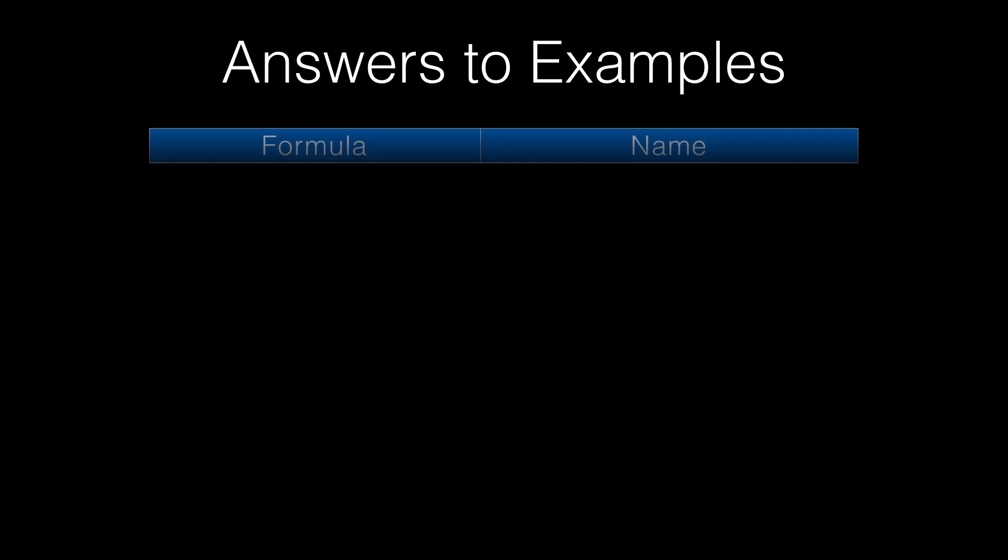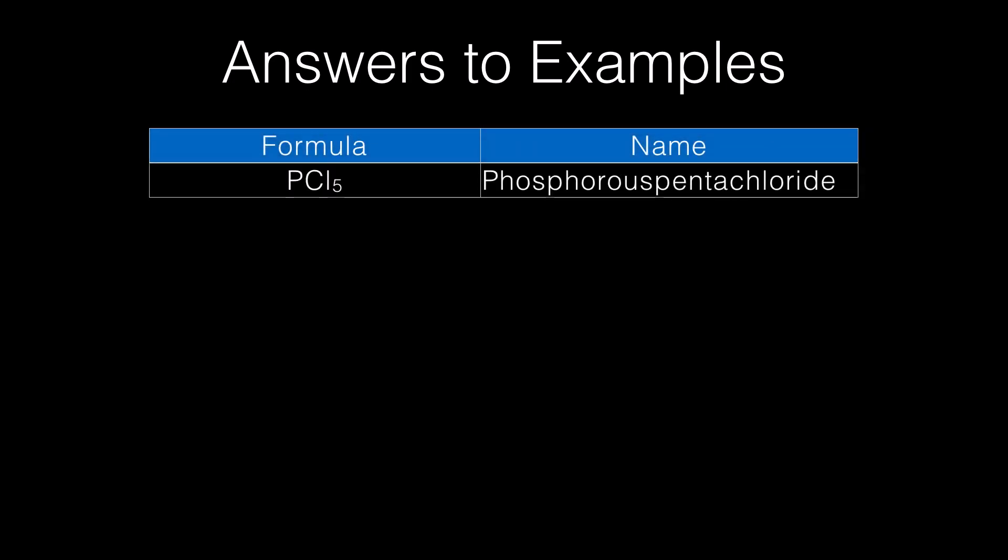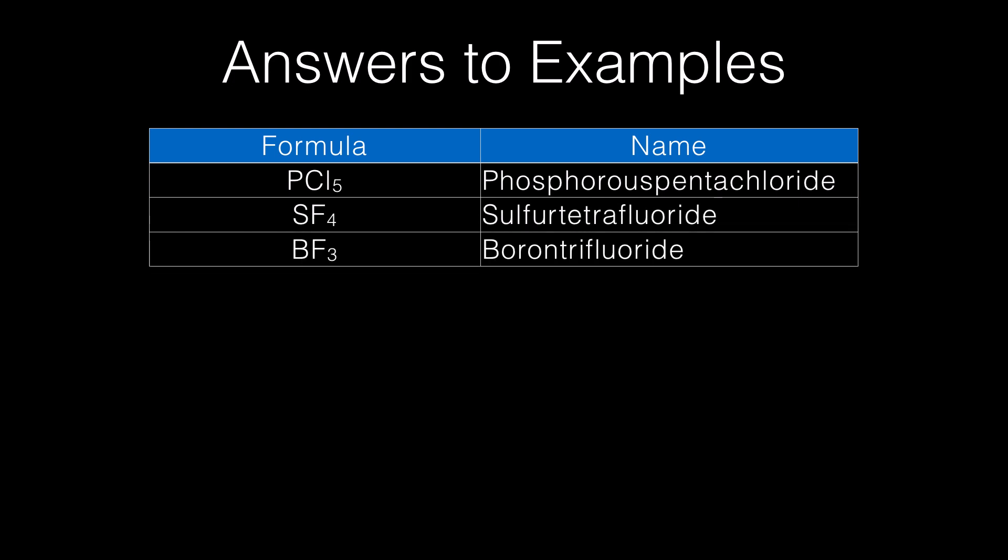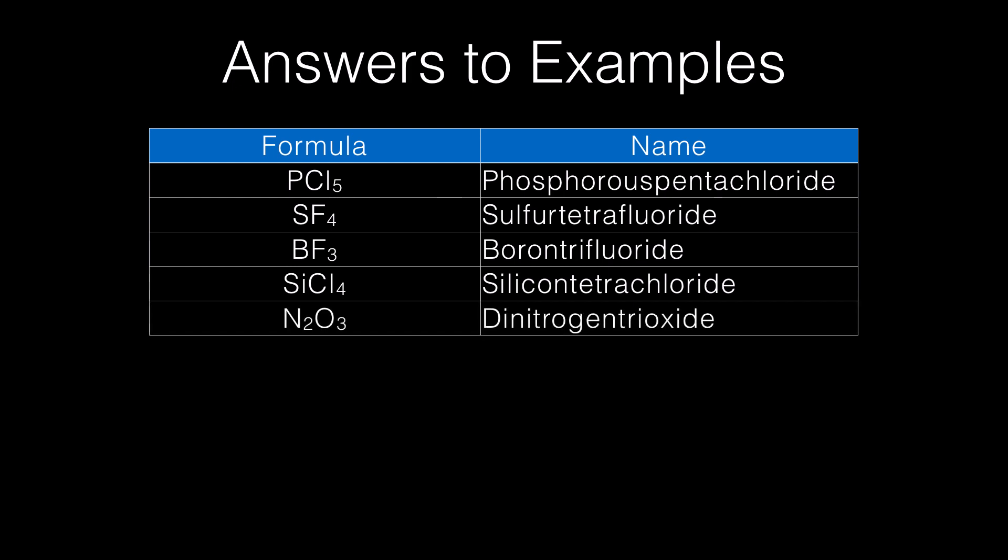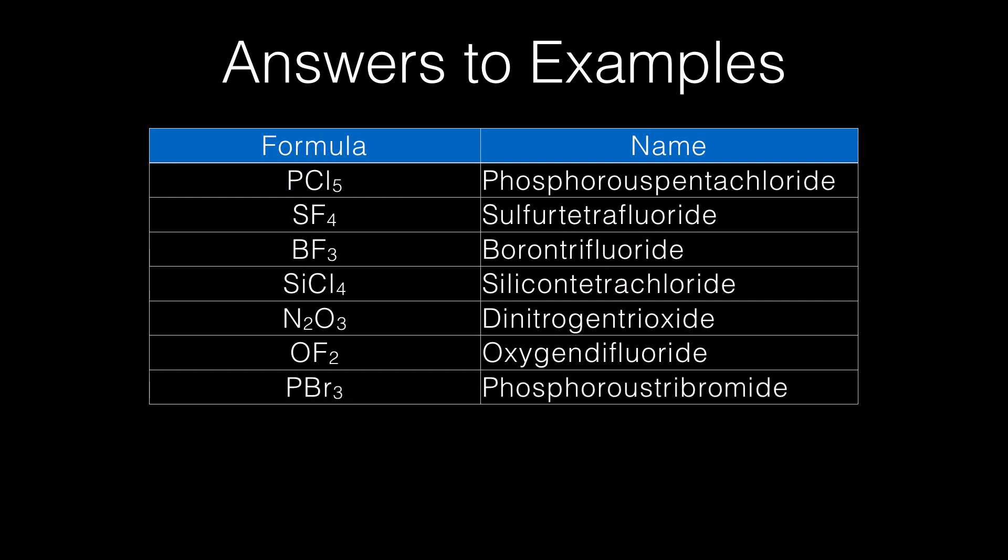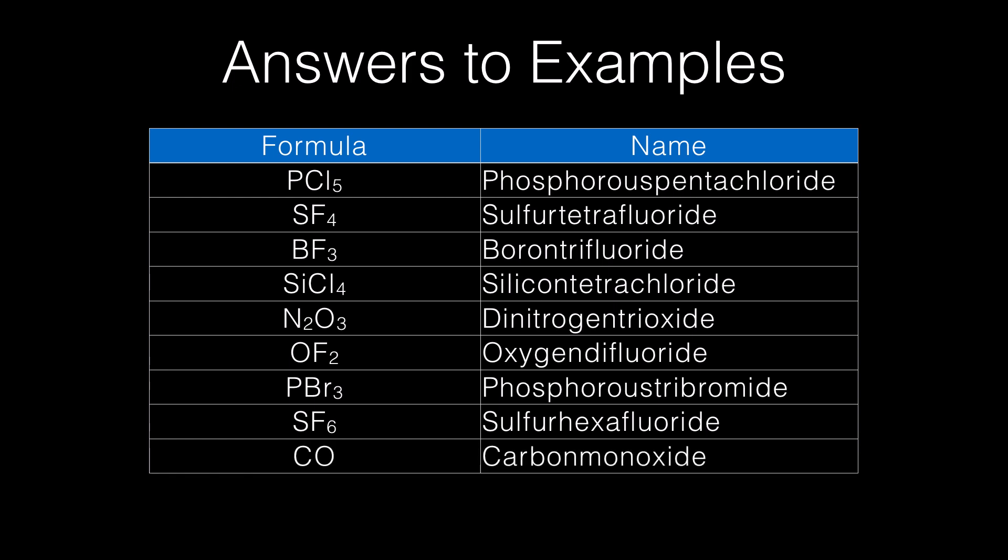Here are the answers to your examples: phosphorus pentachloride, sulfur tetrafluoride, boron trifluoride, silicon tetrachloride, dinitrogen trioxide, oxygen difluoride, phosphorus tribromide, sulfur hexafluoride, carbon monoxide, and dihydrogen monoxide, which is commonly called water.